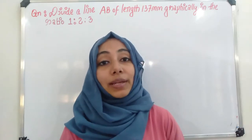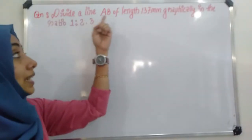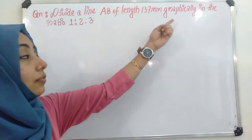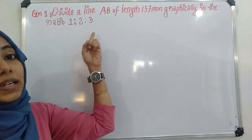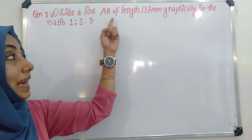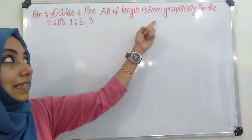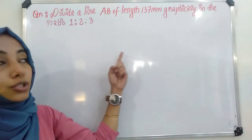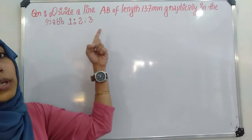Shall we have a question? Question: divide a line AB of length 137 mm graphically in the ratio 1:2:3. We have given a line AB of length 137 mm and we have to divide this line in the ratio 1:2:3.